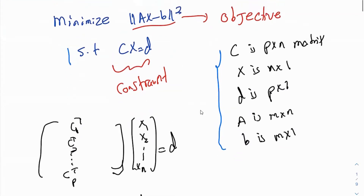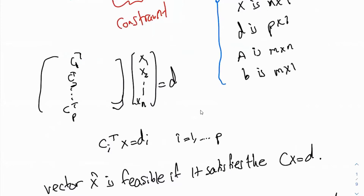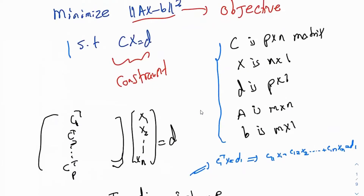You can write this constraint as a system of linear equations. If you write C in terms of its row definition — c1 transpose, c2 transpose, all the way to cp transpose — those are the rows of matrix C. C is p by n so there are p rows. Multiplying by x you get d, so ci transpose x equals di. Each of these is a linear equation: c11 x1 plus c12 x2 all the way plus c1n xn equals d1, and you have p such equations.